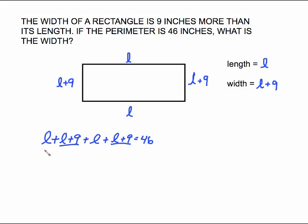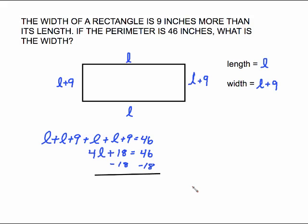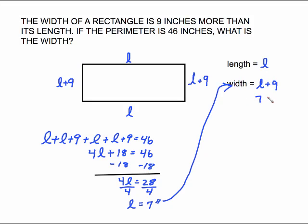Write the equation: top L, plus right side L plus 9, plus bottom L, plus left side L plus 9, all equal to 48. Combine like terms: 4L plus 18 equals 48. Subtract 18 from both sides: 4L equals 28. Divide by 4: L equals 7 inches — that's the length. But we were asked for the width, so plug 7 in for L: 7 plus 9 gives us 16 inches. That is the answer for the width.